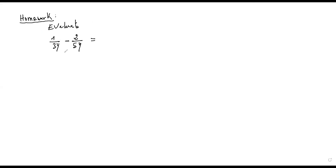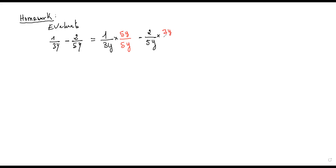As I said in class, you have to find the common denominator. So you do one over three y, multiply by five y top and bottom — so you have five y over five y. Then you take minus two over five y, multiply by three y over three y. We do that because we're looking for the same denominator.